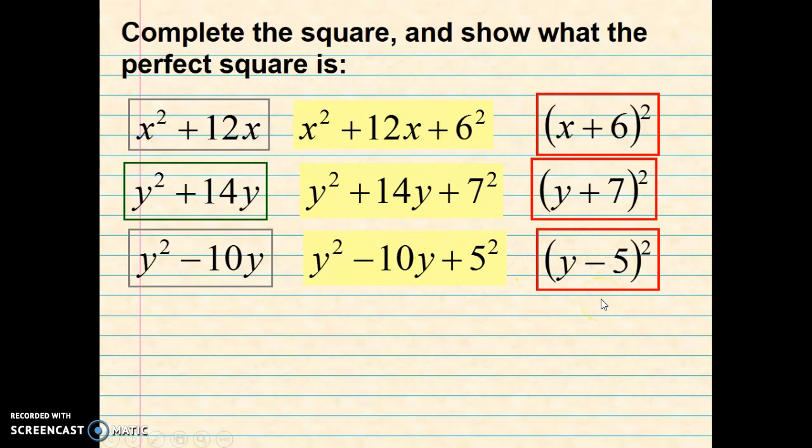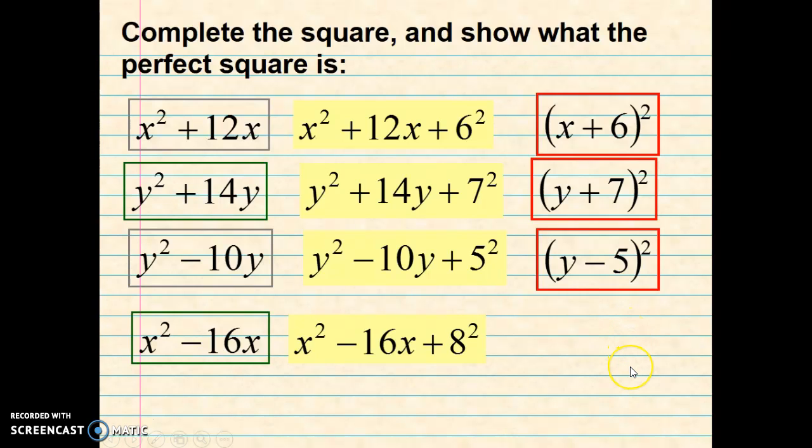Okay, moving on to the last one: x squared minus 16x. What would be the trinomial for this one? Well, we would divide 16 by 2 and square it and add it to the end. That would give us x squared minus 16x plus 8 squared. Then the following binomial factor applies to this one: x minus 8 squared.